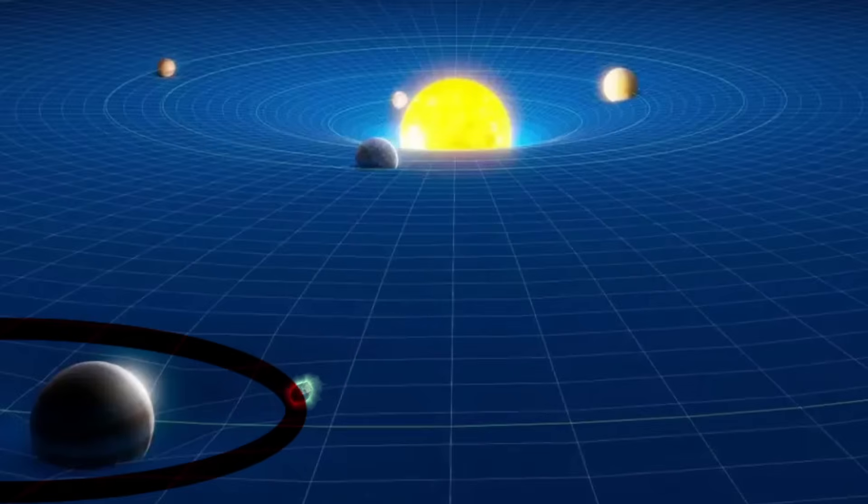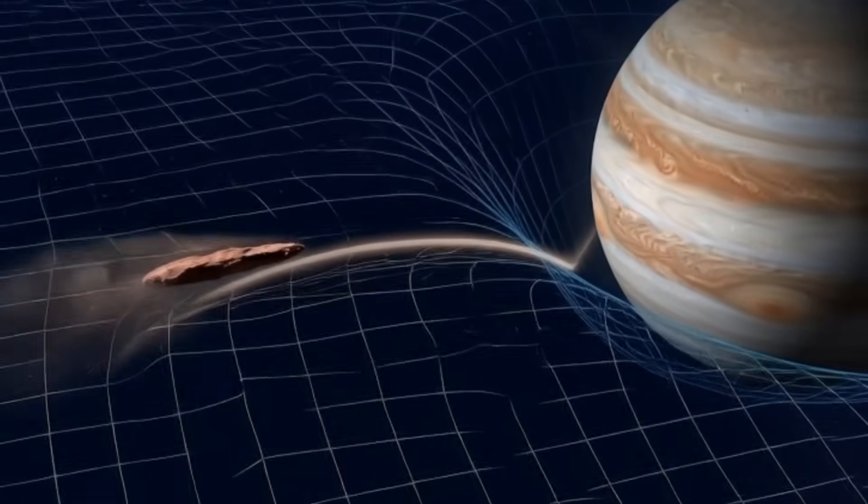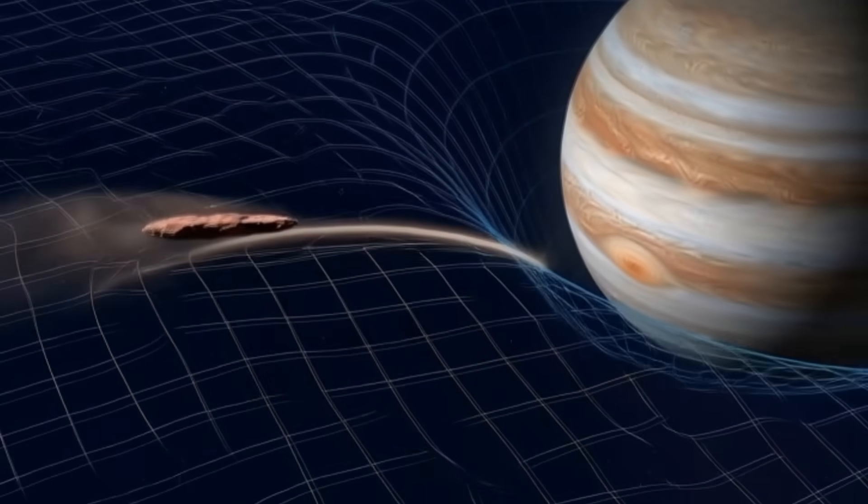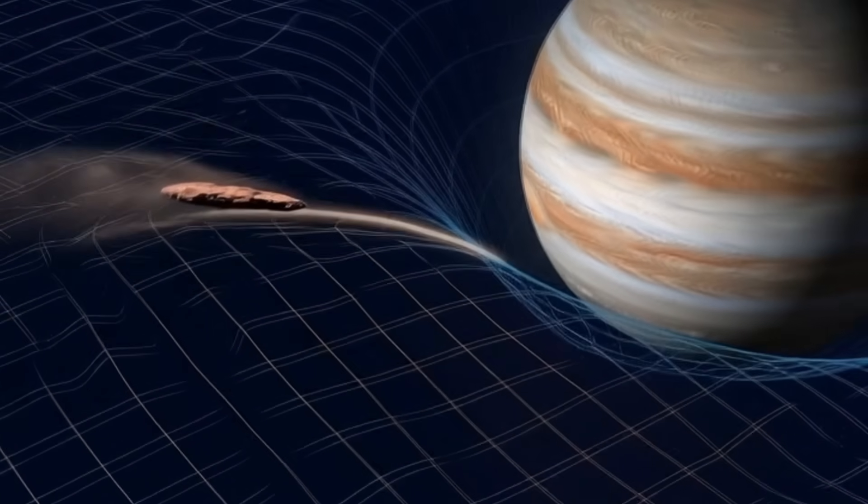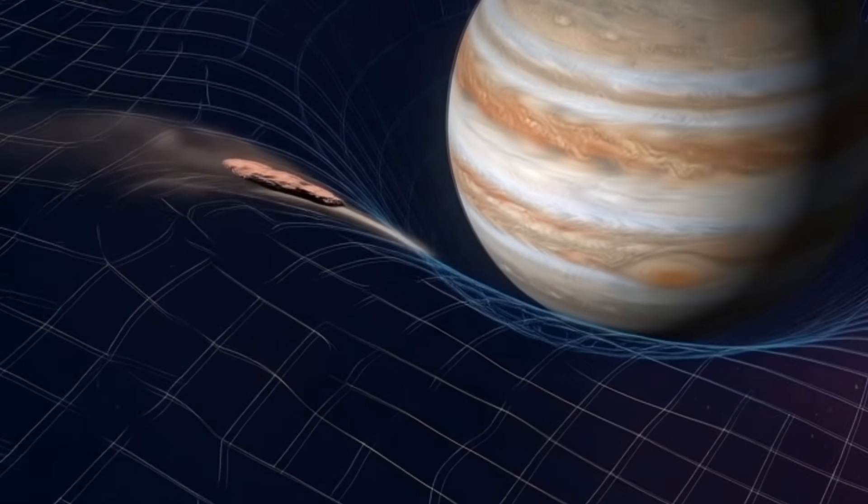This boundary, called the Hill Sphere, is the exact zone where any object that isn't fast enough to escape will start feeling Jupiter's pull and could even be captured by it.